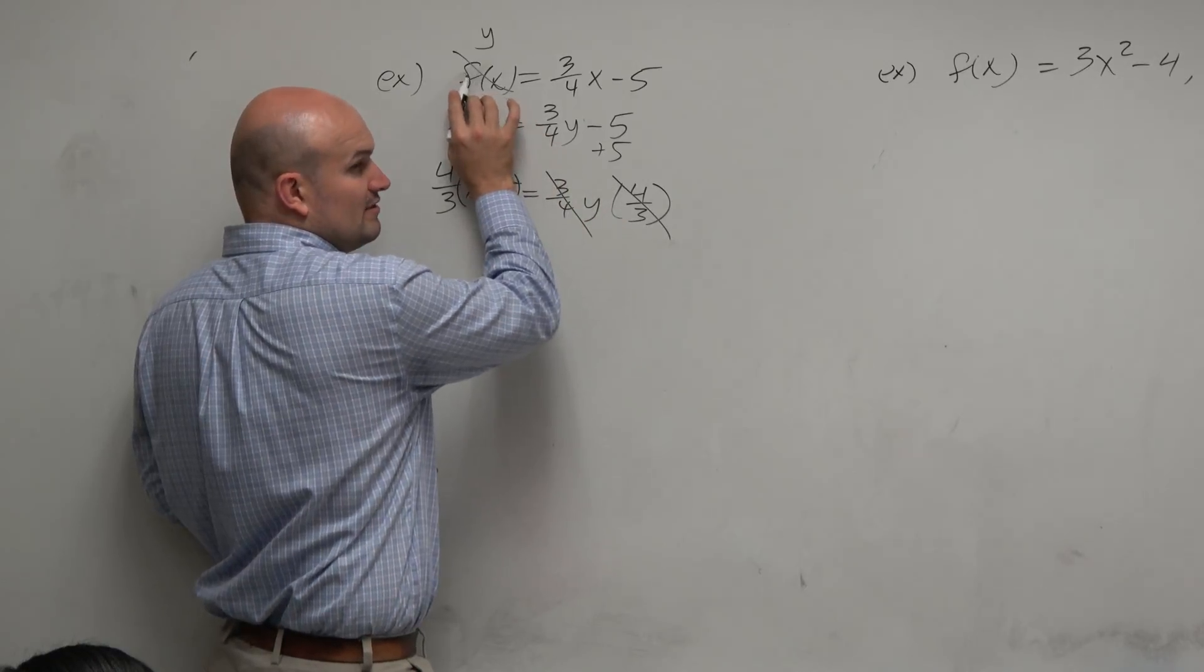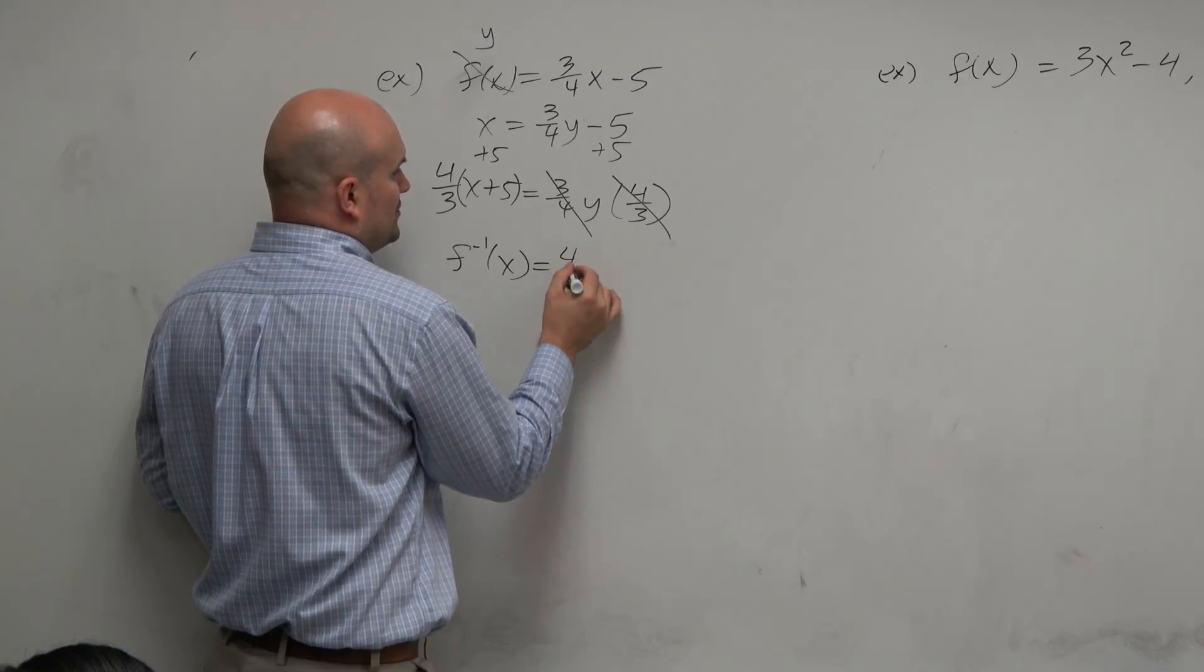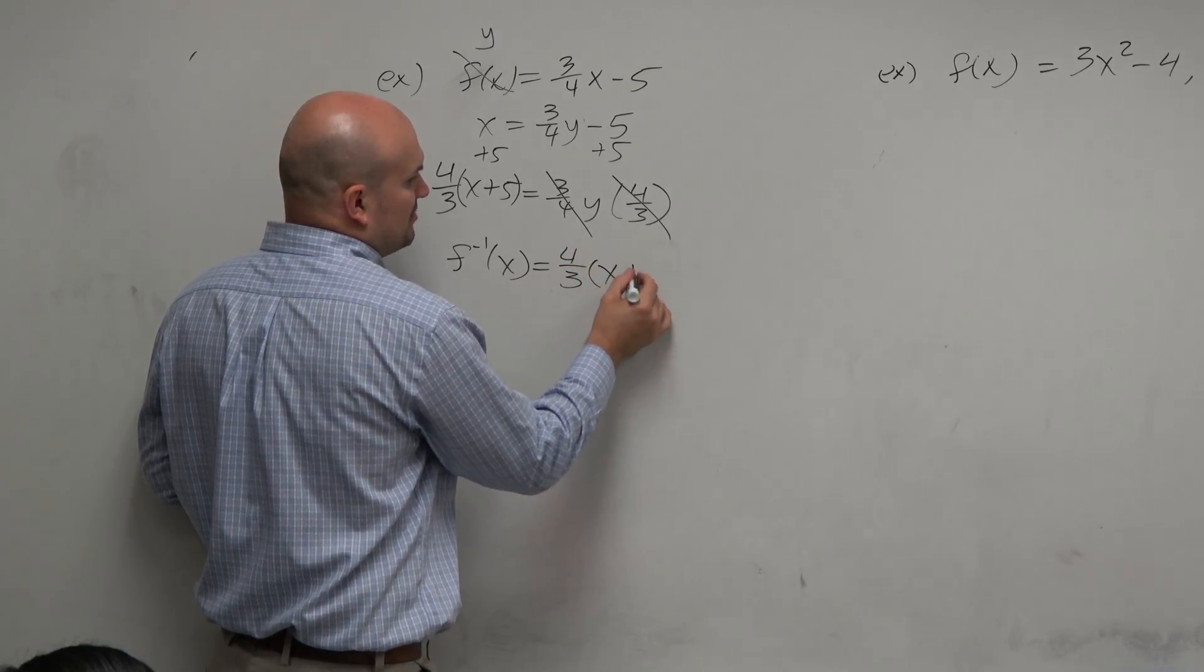Then we replace y with function notation. So this is f inverse of x equals four-thirds times x plus 5.